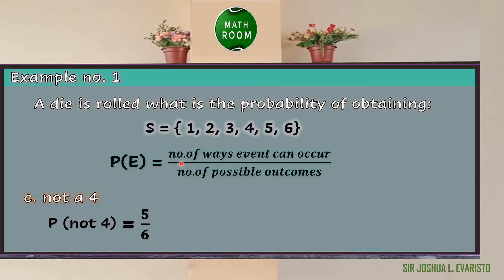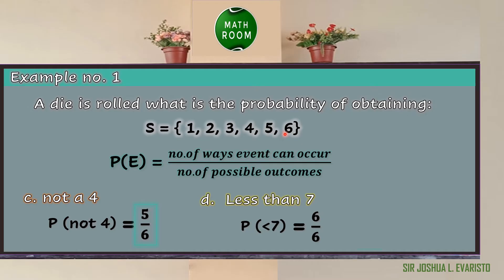How about the probability of getting not a 4? Using the formula, not getting a 4 includes 1, 2, 3, 5, and 6, which means we have 5 number of ways the event can occur, over 6 possible outcomes. So 5 over 6 is the probability of getting not a 4 when you roll a die. How about the probability of getting less than 7? Using the formula, we have 6 over 6, because 1, 2, 3, 4, 5, and 6 are all less than 7. Six over 6 equals 1. In probability, 1 means certain.